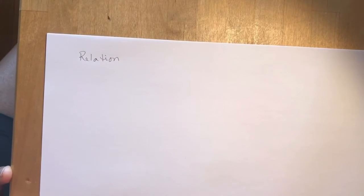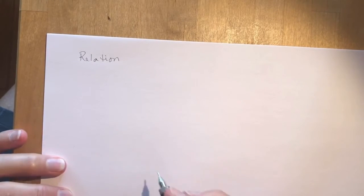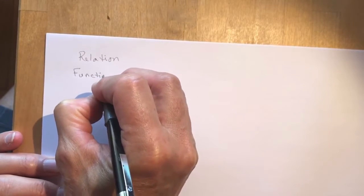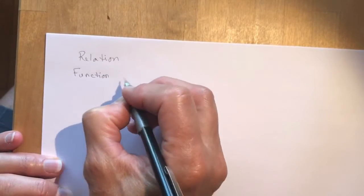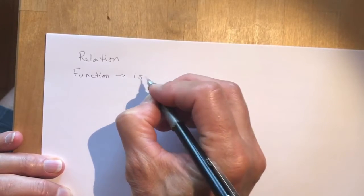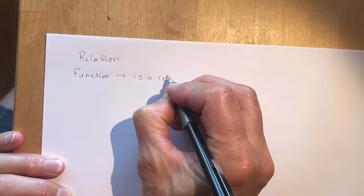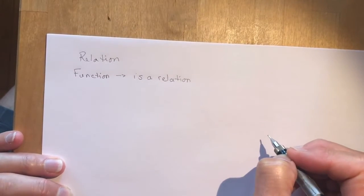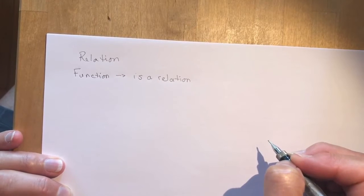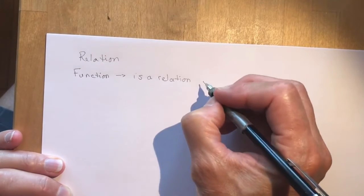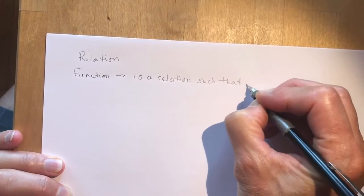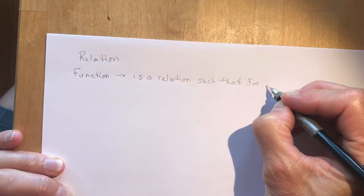So what's the difference between a math relation and a math function? For math functions — and this is what you're going to be studying in grade 11, that's why the book's called Functions — a function is a relation. In other words, it is a relationship between two things, normally x and y. A function is a relation such that for every value of x there is one value for y.